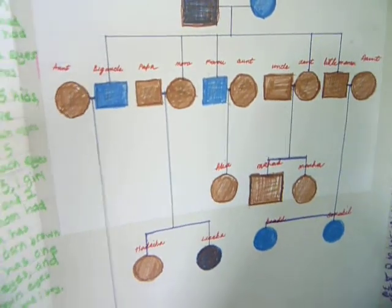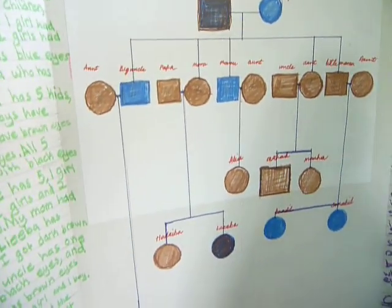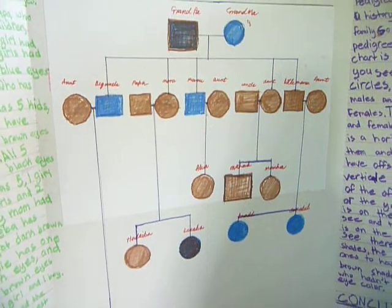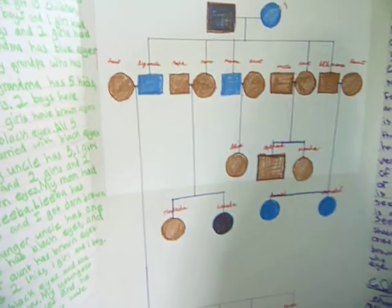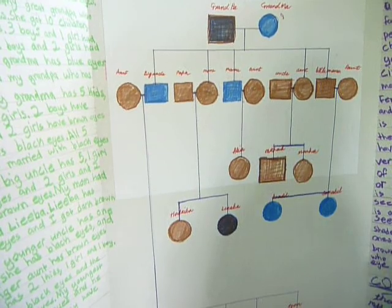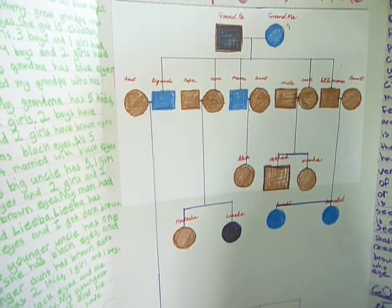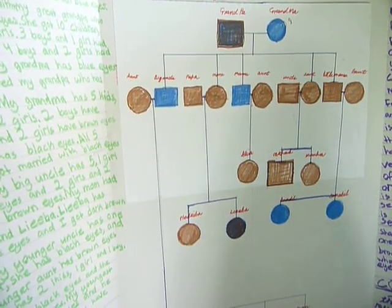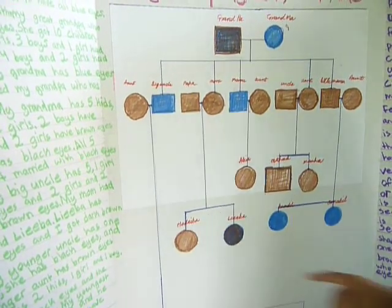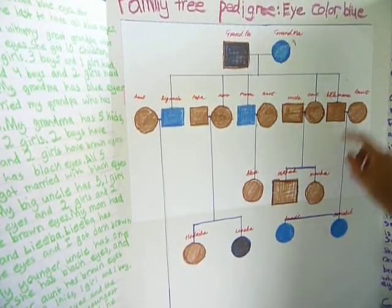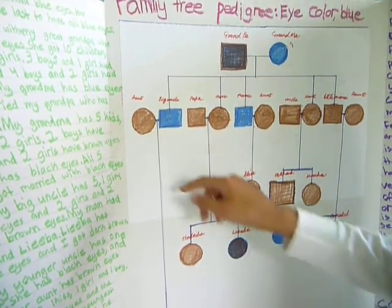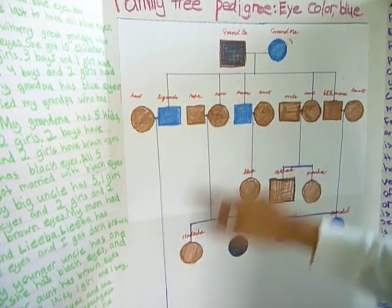As you see, there are blue and brown shades. The blue shade is for the ones who have blue eyes, and the brown shade is for the ones who don't have the blue eye color. All brown.